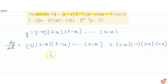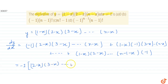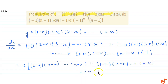Continuing in this manner, at the last term we differentiate (n minus x) and keep all other functions as they are, giving (1 minus x)(2 minus x)...(n minus 1 minus x) into minus 1. Taking out minus 1 common from all terms, we get: (2 minus x)(3 minus x)...(n minus x) plus (1 minus x)(3 minus x)...(n minus x) plus ... plus (1 minus x)(2 minus x)...(n minus 1 minus x).